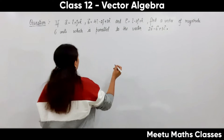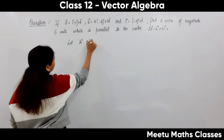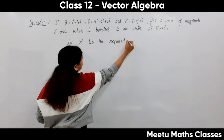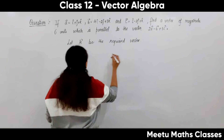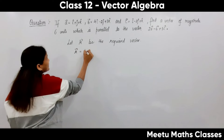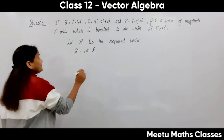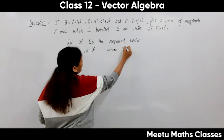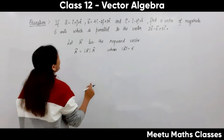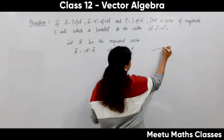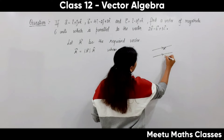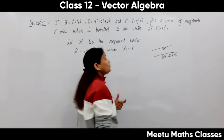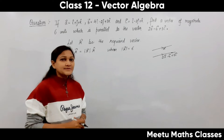Let R be the required vector. So R equals the magnitude of R times the direction of R. We are given that the magnitude of R is 6 units, and vector R is parallel to the vector 2A minus B plus 3C. When two vectors are parallel, their direction vectors must be the same.